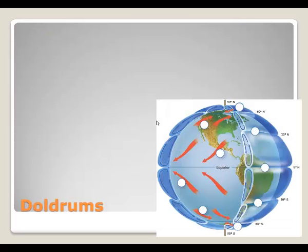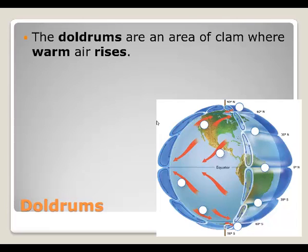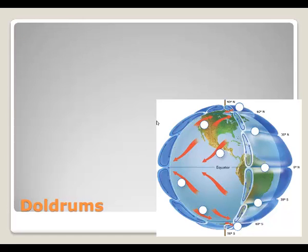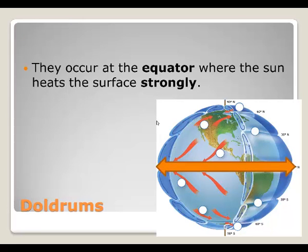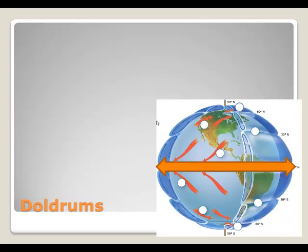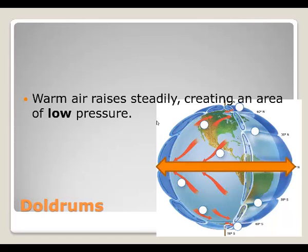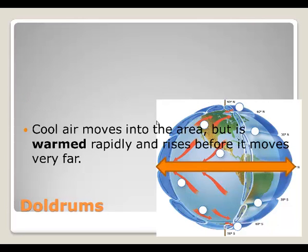The wind belts on our planet are due to the Coriolis effect and the uneven heating of our planet. The doldrums are an area of calm where warm air rises, found at the equator. The sun heats the surface strongly there, warm air rises steadily and creates an area of low pressure. Cold air moves in but is warmed rapidly and rises very quickly, so there is very little wind at the equator.